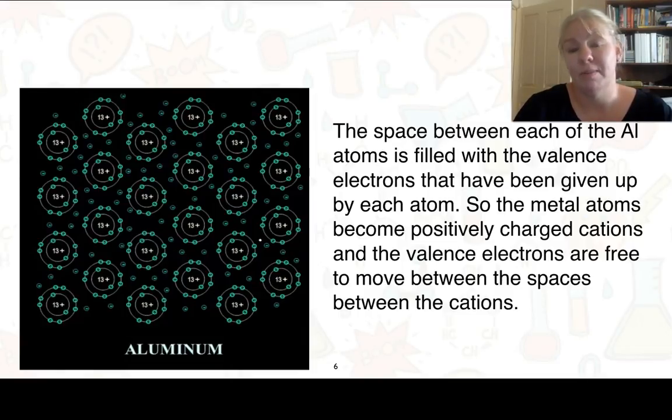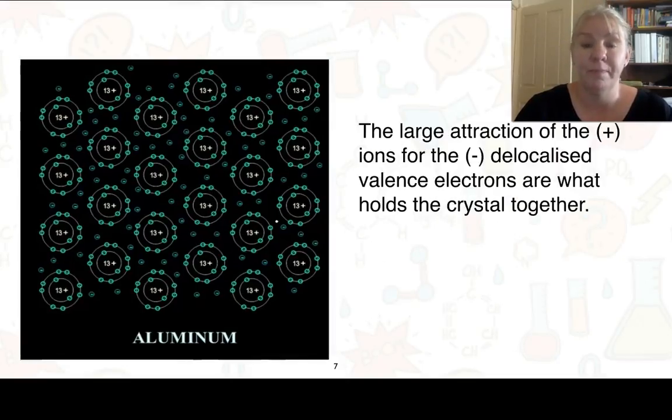So the metal atoms, because they've given them up, become positively charged. In this case we've got 3 plus and we have valence electrons that are free to move between the spaces of those cations. Due to this we have a large attraction of the positive metal ions and the delocalised valence electrons and that's what holds that crystal together.